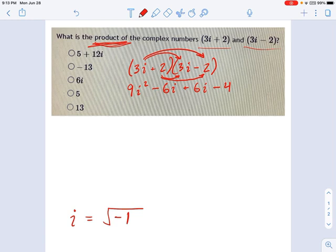So don't worry about what i is, just treat it like a variable for the moment. We'll get to it in a bit. If you have negative 6i and positive 6i, those are going to cancel out. So you're going to get 9i squared minus 4.